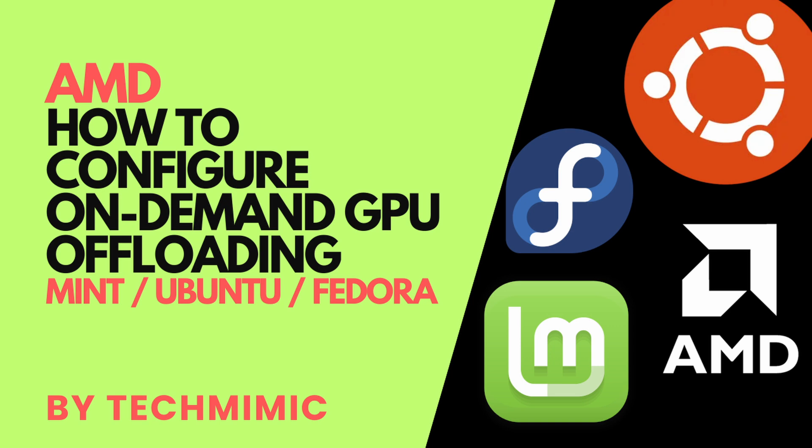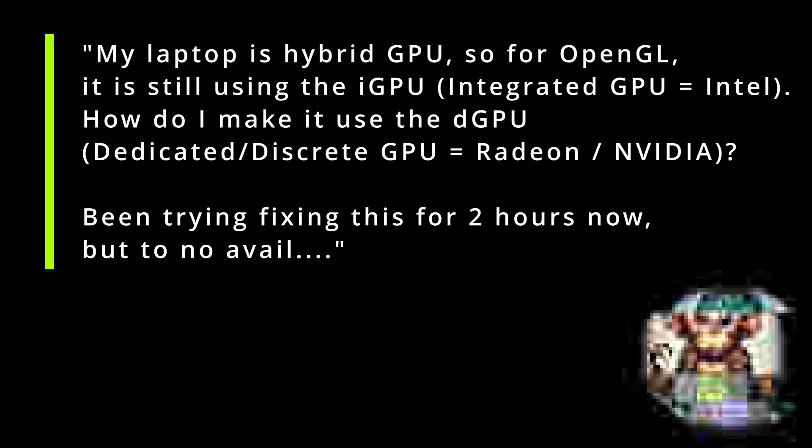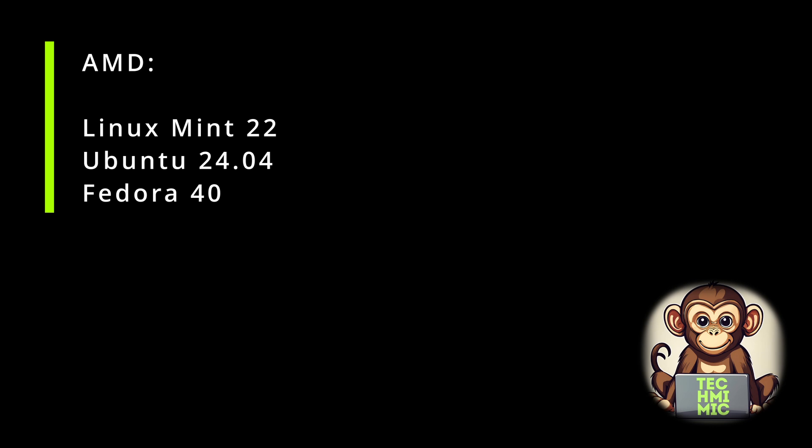In the comment section of an earlier video, a viewer raised a question that I thought would make for an interesting video. My laptop is a hybrid GPU, so for OpenGL it is still using the integrated GPU, which is Intel. How do I make it use the dedicated or discrete GPU, which is Radeon or NVIDIA? I've been trying to fix this for two hours now, but to no avail. Well, I'm sure we all know that feeling.